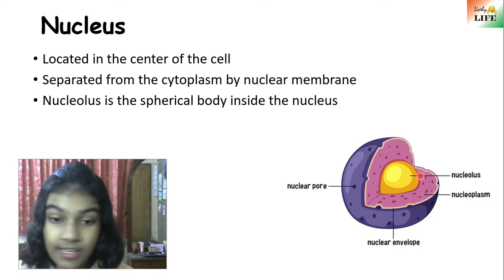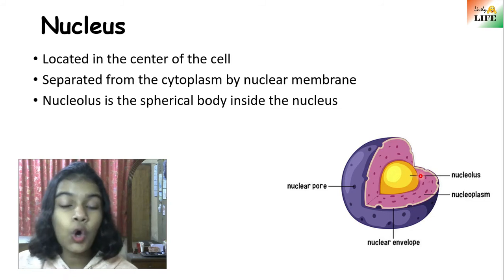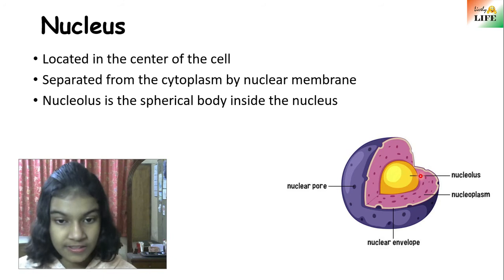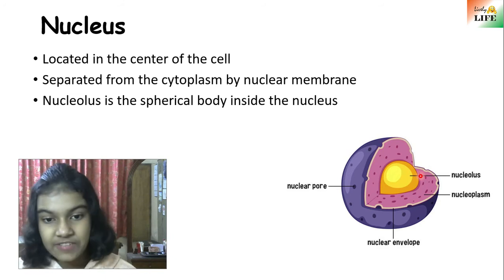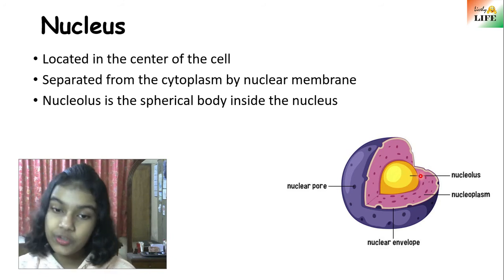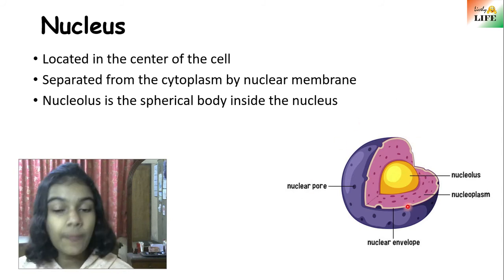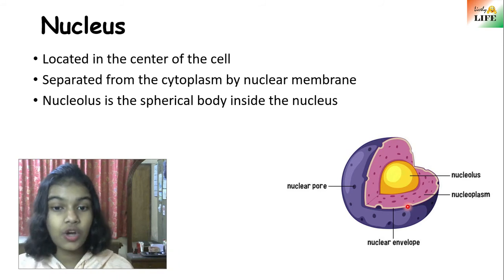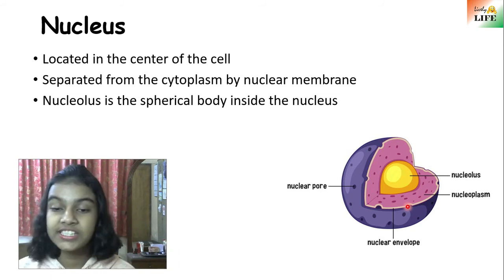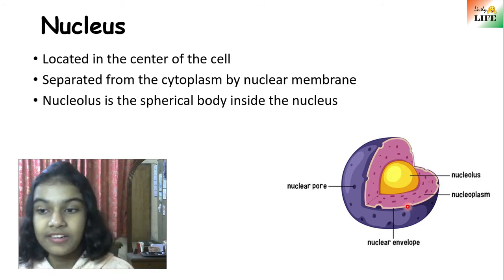The nucleus is the control center of the cell — it controls all the activities going on in the cell. The organelles perform certain activities, and everything is controlled by the nucleus. That is how important the nucleus is: it is the control center of all the activities happening in the cell.